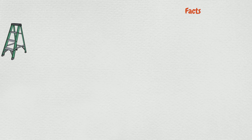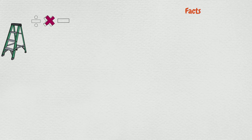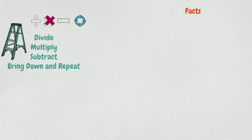Let's review our easy steps. We divide, multiply, subtract, bring the number down, and repeat. Memorize this or write it on your paper so that you can remember the steps.